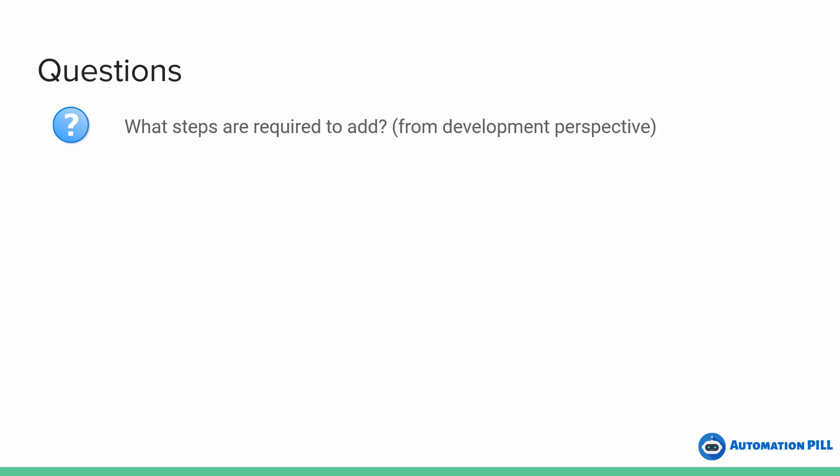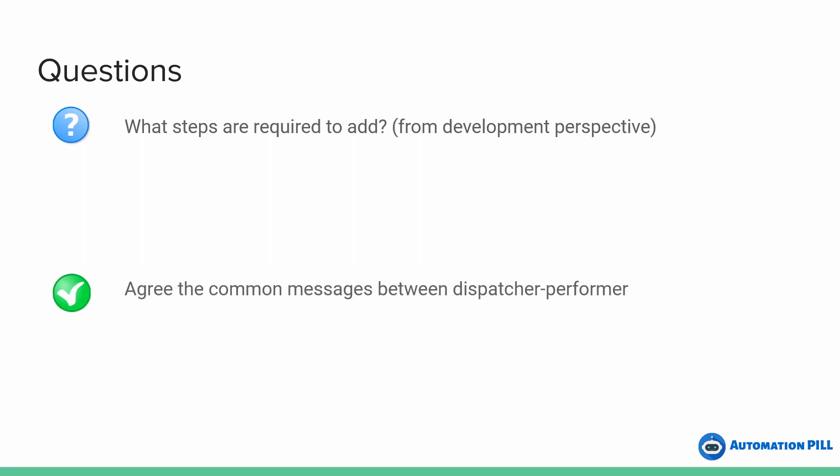What about the additional steps we need to add? The contracts — the messages exchanged between dispatcher and performer — need to be written down somewhere. That would be an extra step for documentation. If you're using Scrum with Epics and Stories, that's where you write this documentation and these contracts. But this is more related to architecture, so it's not a step the developer should do — they should only respect the specification they have received.